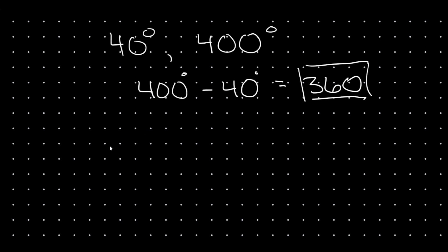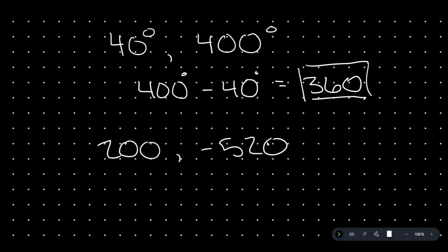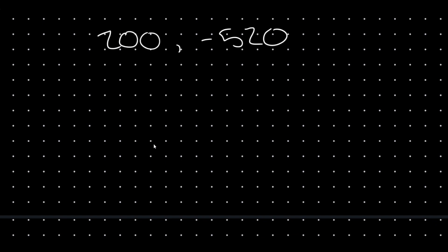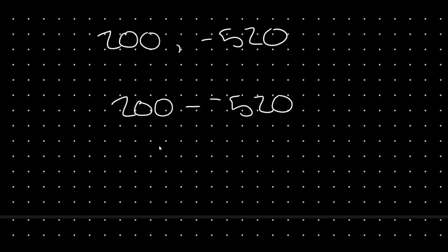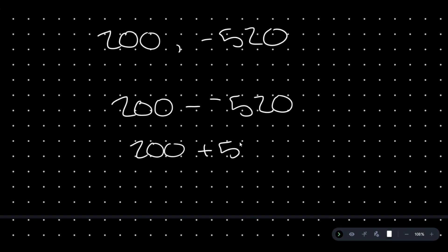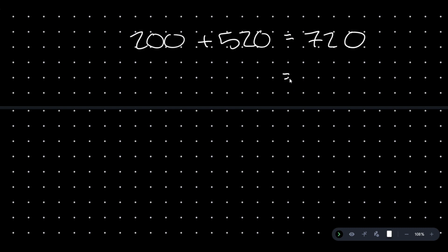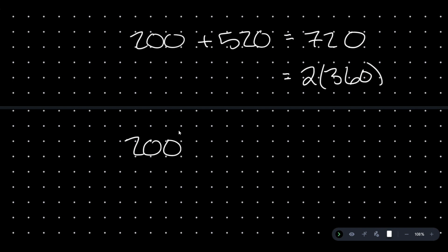Let's try another example. What about the two angles 200 and negative 520? Are these coterminal? We find the difference: 200 minus negative 520. Subtracting a negative is just like adding, so this is 200 plus 520, which is 720. And 720 is 2 times 360, so 720 is a multiple of 360. Therefore, 200 degrees and negative 520 degrees are coterminal.